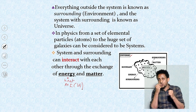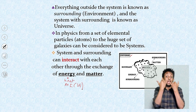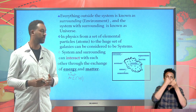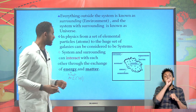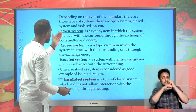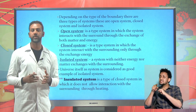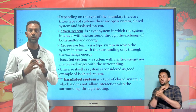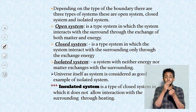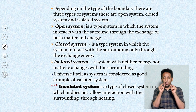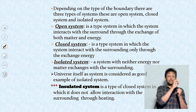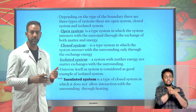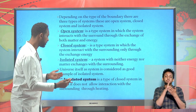Depending on the boundary, it's possible to classify systems into three types: open system, closed system, and isolated system. An open system is one in which there is both matter and energy interaction. A closed system has only energy interaction - there is no matter interaction. An isolated system is one in which neither energy nor matter exchange is allowed between the system and surroundings.